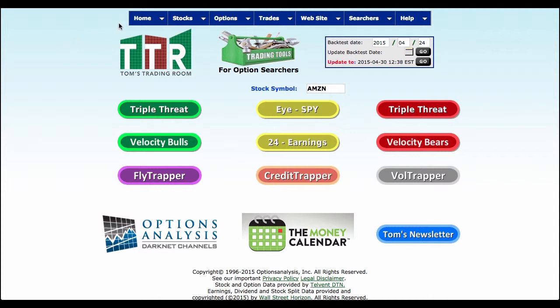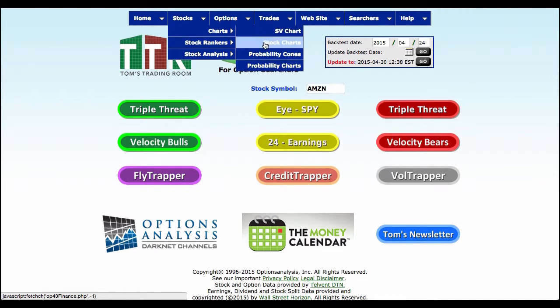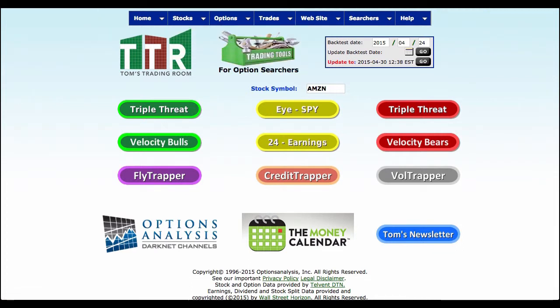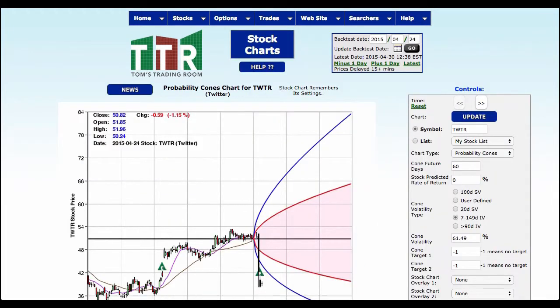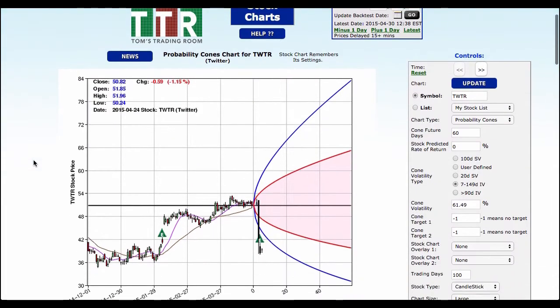Once you've logged in, I want you to go to stocks, and then go to charts, and we're going to look at probability cones first, and then we'll look at probability charts. These are the two areas that you can use in our tools to help you get a gauge on where a stock's expected move is likely to happen.